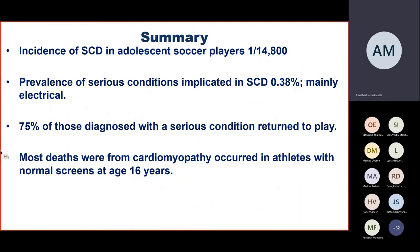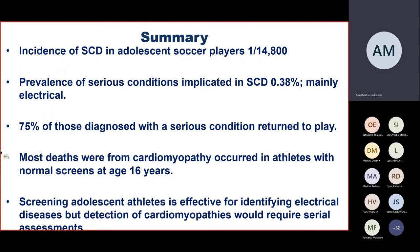In summary, from our experience, the incidence of sudden cardiac death amongst adolescent football players is about one in 15,000. The prevalence of such conditions is about 0.38%, which are mainly electrical. Three quarters of those diagnosed with a condition could return to play. Most deaths were from cardiomyopathy in athletes with normal screens at age 16. The European view is that screening adolescent athletes is effective for identifying electrical diseases, but the detection of cardiomyopathy would require serial assessments — as opposed to the more cynical view that such conditions were actually missed.